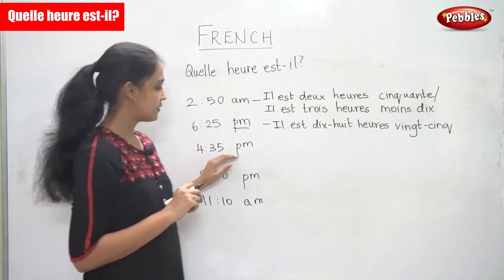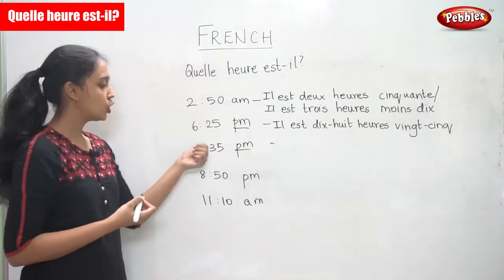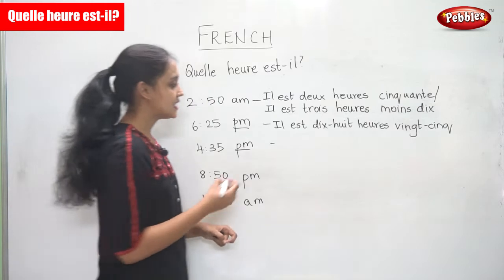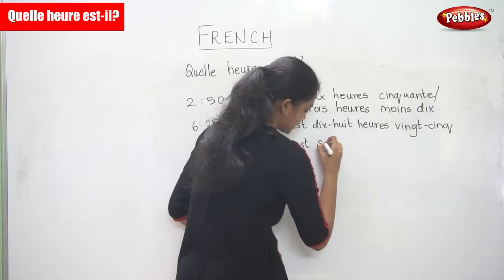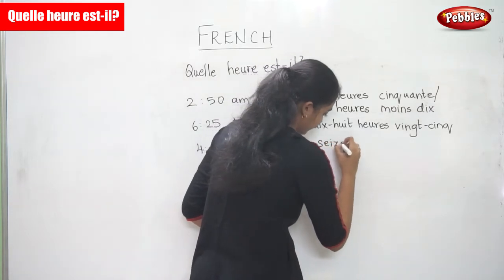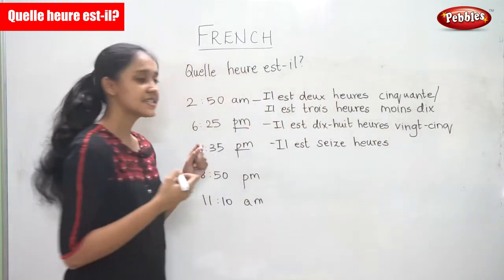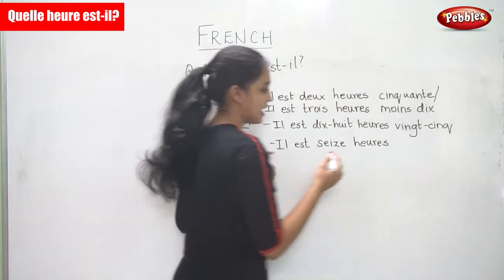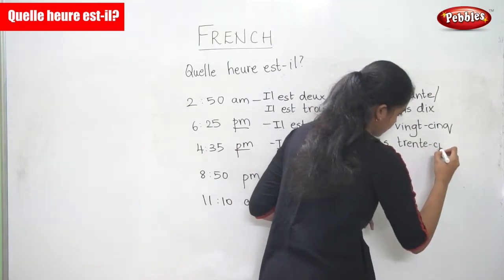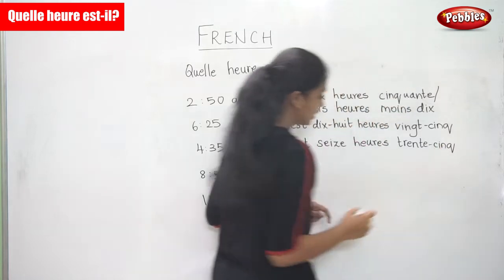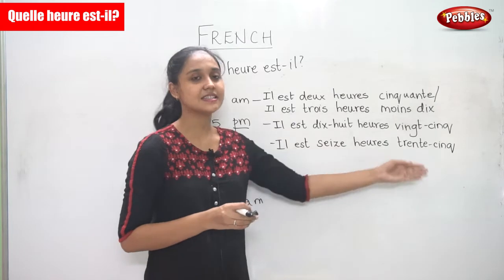The next question: 4:35 PM. Again PM, so four would be sixteen hours. So 'il est seize heures.' And thirty-five is 'trente-cinq.' Sixteen hours thirty-five.